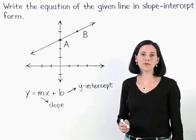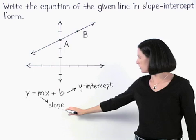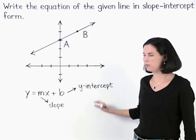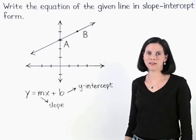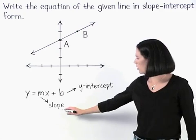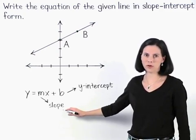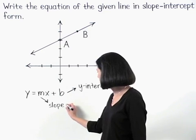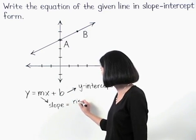So our first step is to find the slope and y-intercept of the given line. To find the slope, remember that we use the ratio rise over run between any two points on the line.